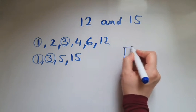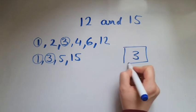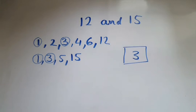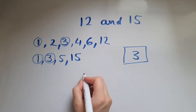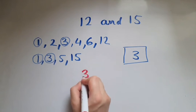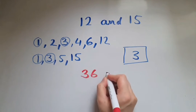So 3 is the highest common factor of 12 and 15. Now what about 36 and 42?